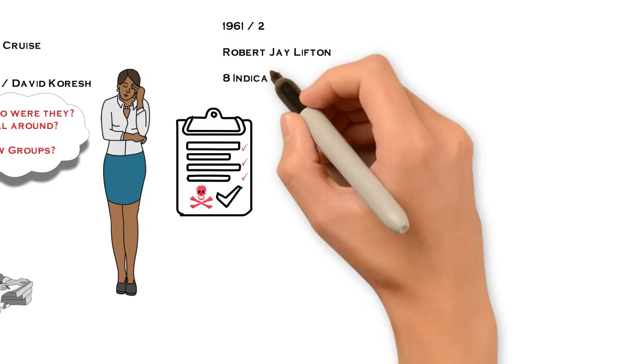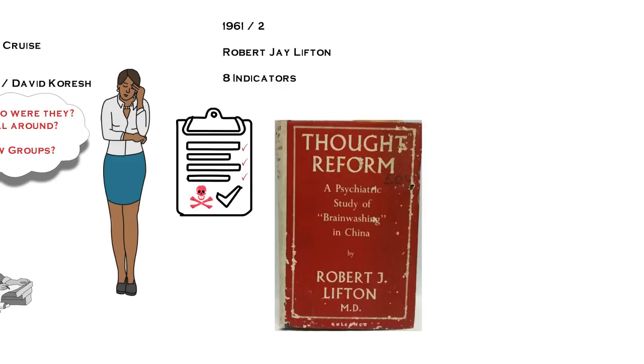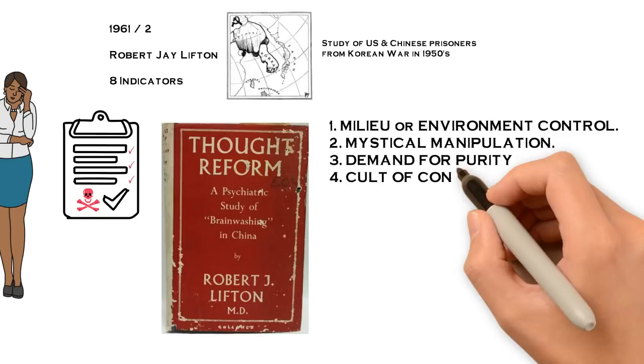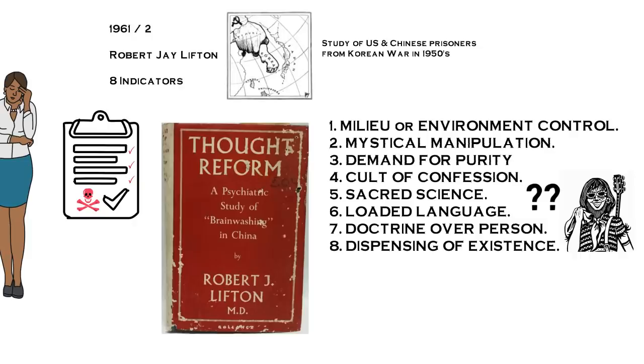Just for a minute, let's go back to the 60s where Professor Robert J. Lifton was researching mind control. In his 1962 book 'Thought Reform and the Psychology of Totalism,' he gave eight indicators of cult behavior or brainwashing after studying at length the Korean War Chinese prisoners of war. Lifton came up with these eight indicators: milieu or environmental control, mystical manipulation, demand for purity, cult of confession, sacred science, loaded language, doctrine over person, and dispensing of existence.